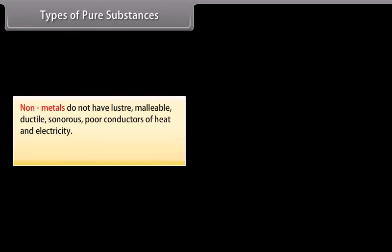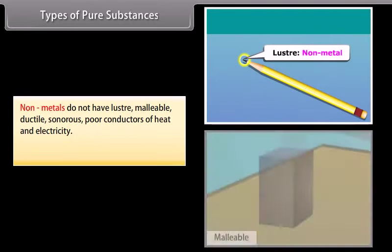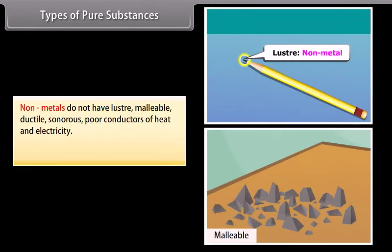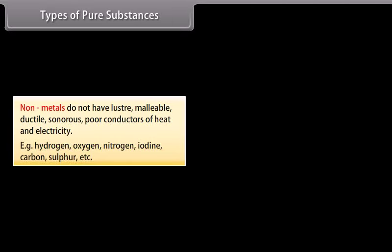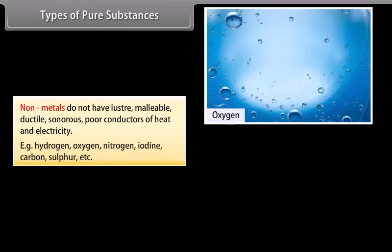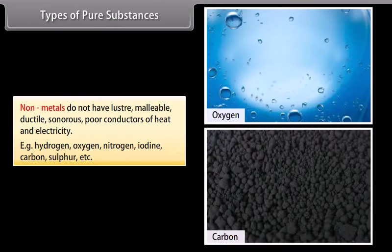Non-metals do not have lustre, malleability, ductility, or sonorousness, and are poor conductors of heat and electricity. Examples include hydrogen, oxygen, nitrogen, iodine, carbon, and sulfur.